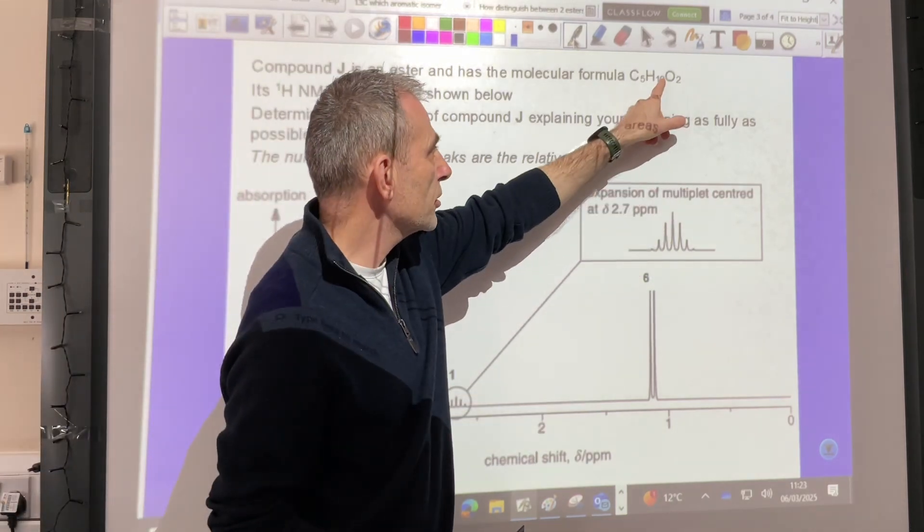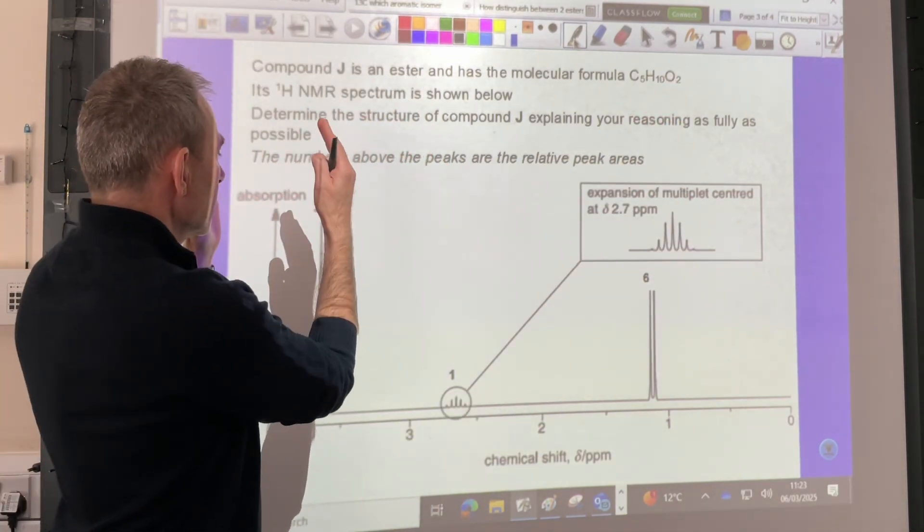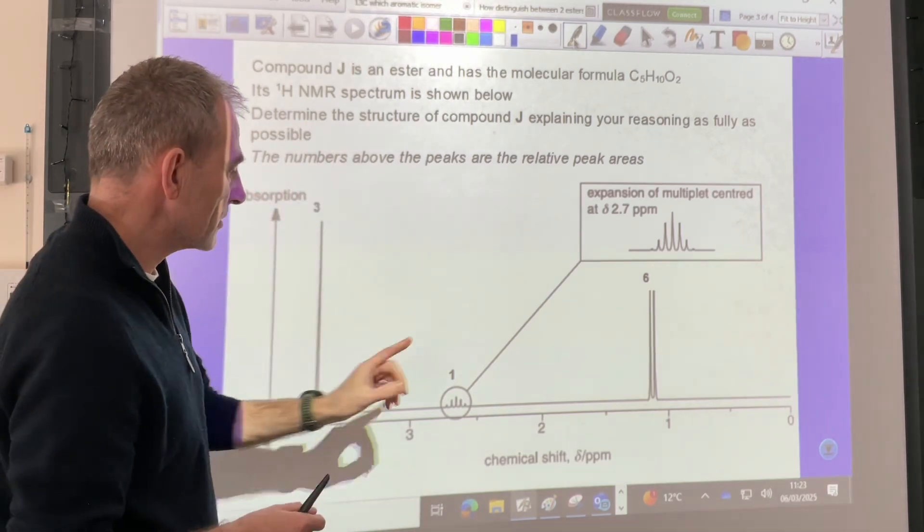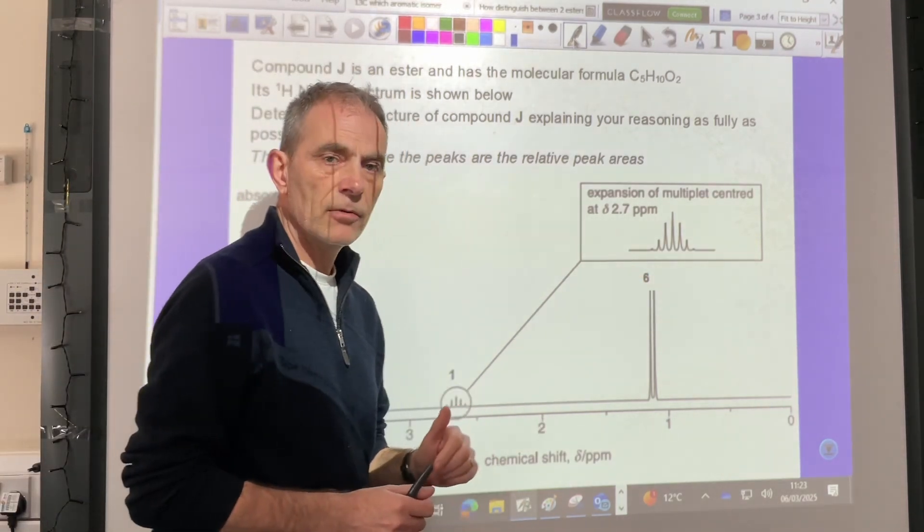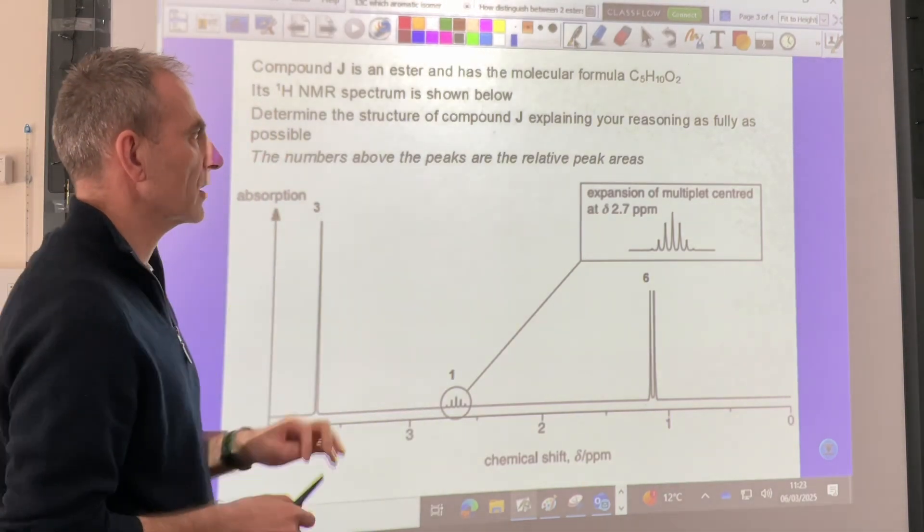So what that's telling you is the protons add up to the peak areas. There's actually three protons in that environment, there's one in that one, there's six in that one. It's not like a simplified ratio. So that's the first very quick thing you can do.